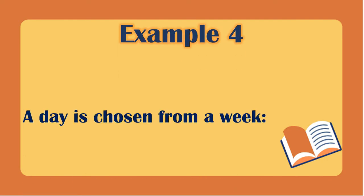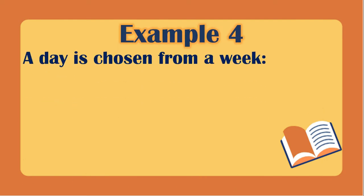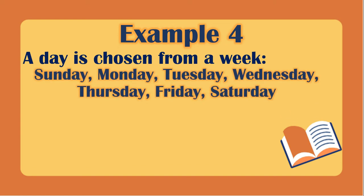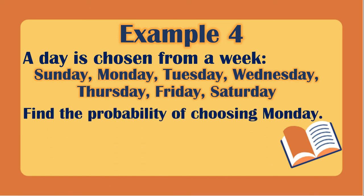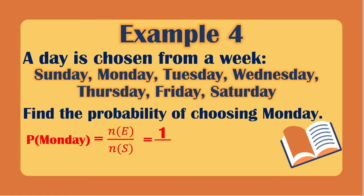Example 4: A day is chosen from a week. A week is composed of Sunday, Monday, Tuesday, Wednesday, Thursday, Friday, and Saturday — 7 days in total. What is the probability of choosing Monday? The favorable outcome is 1, since there is only one Monday in a week, over the total of 7.